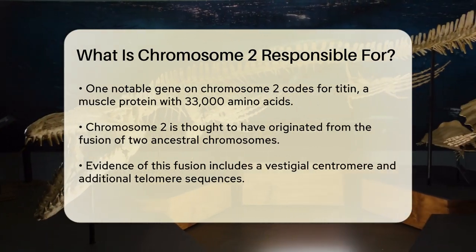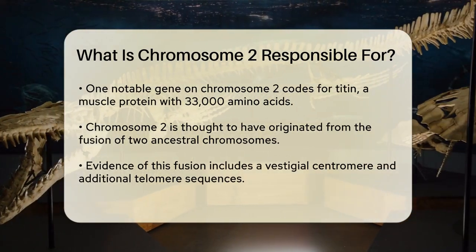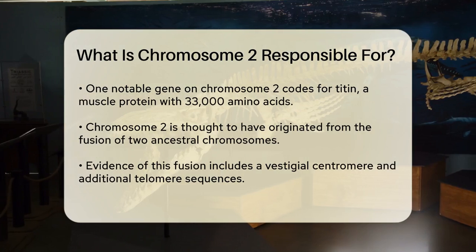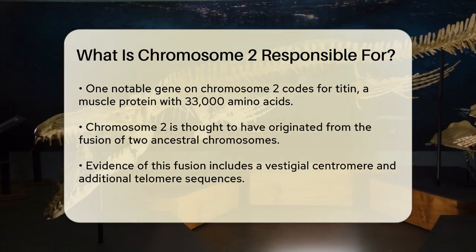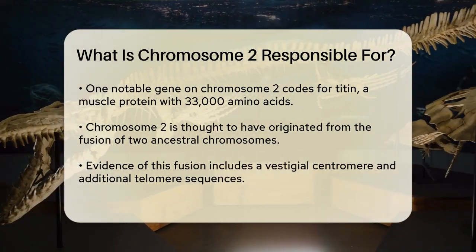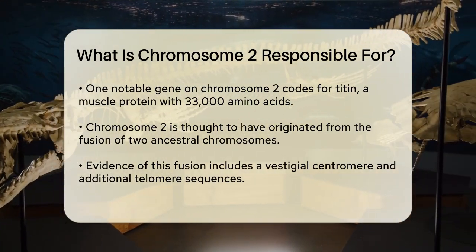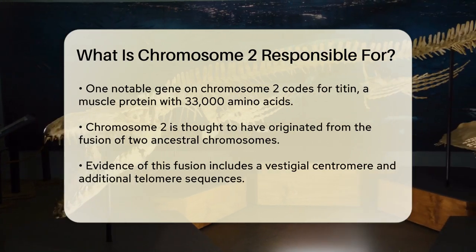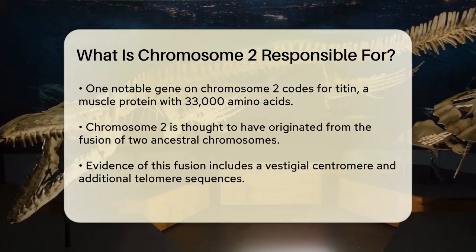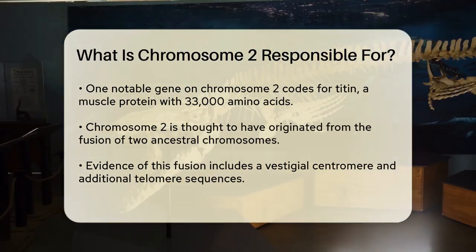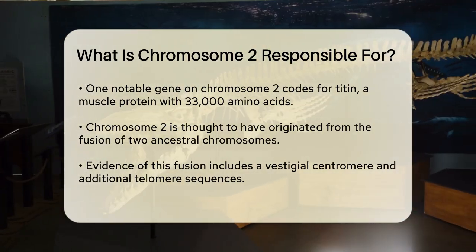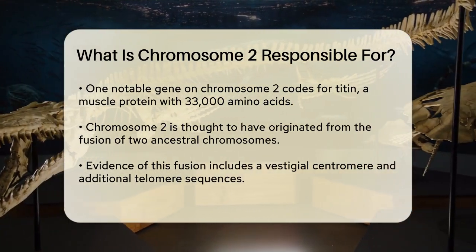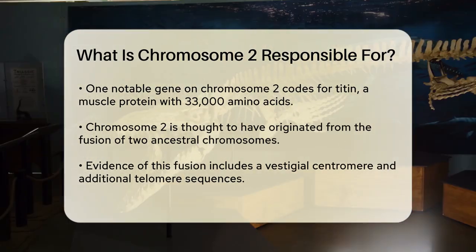Now let's talk about some of the health conditions associated with changes in chromosome 2. One condition is the 2q37 deletion syndrome, caused by a deletion of genetic material near the end of the long arm of chromosome 2. This can lead to intellectual disability, behavioral problems, obesity, and skeletal abnormalities.